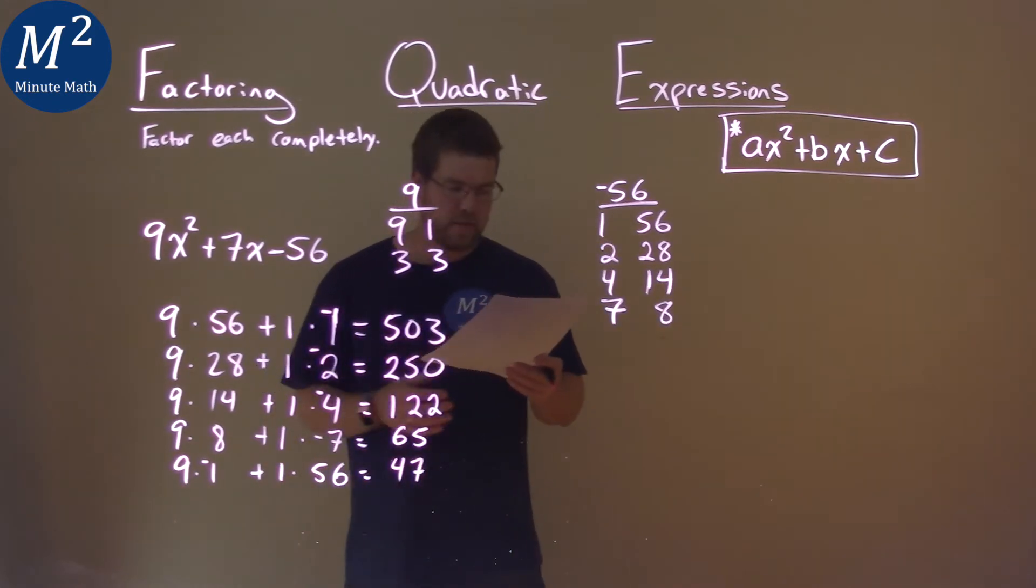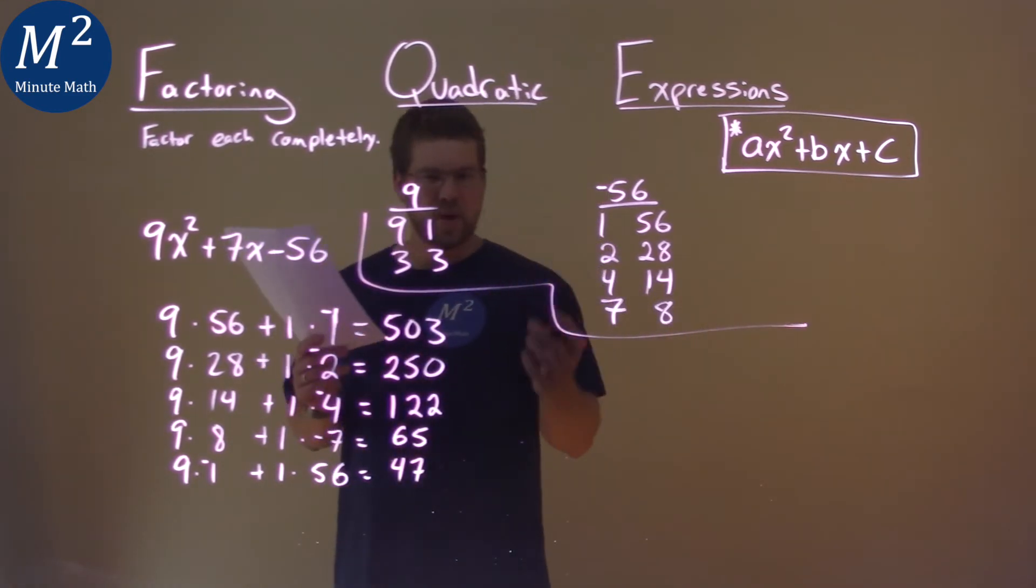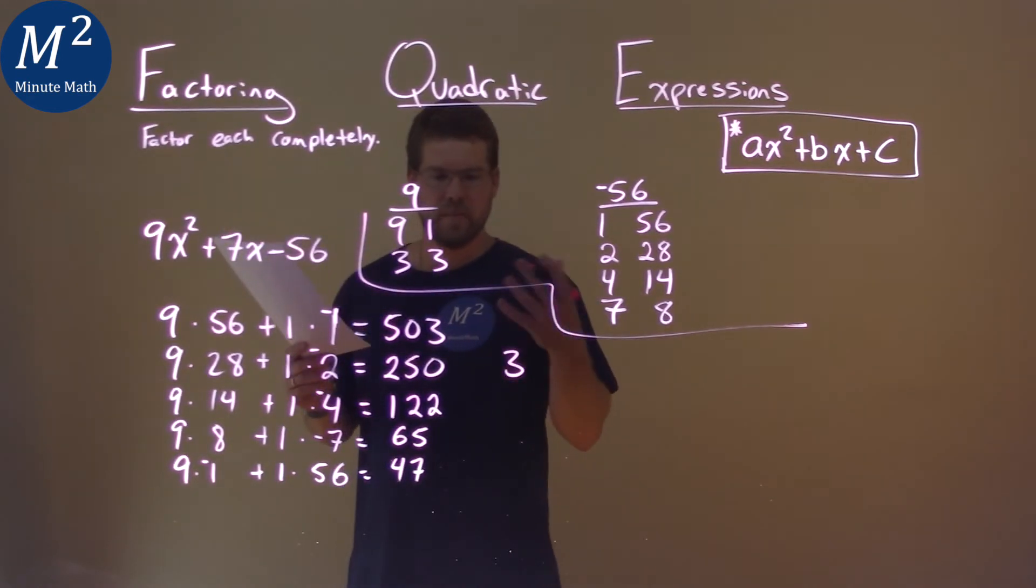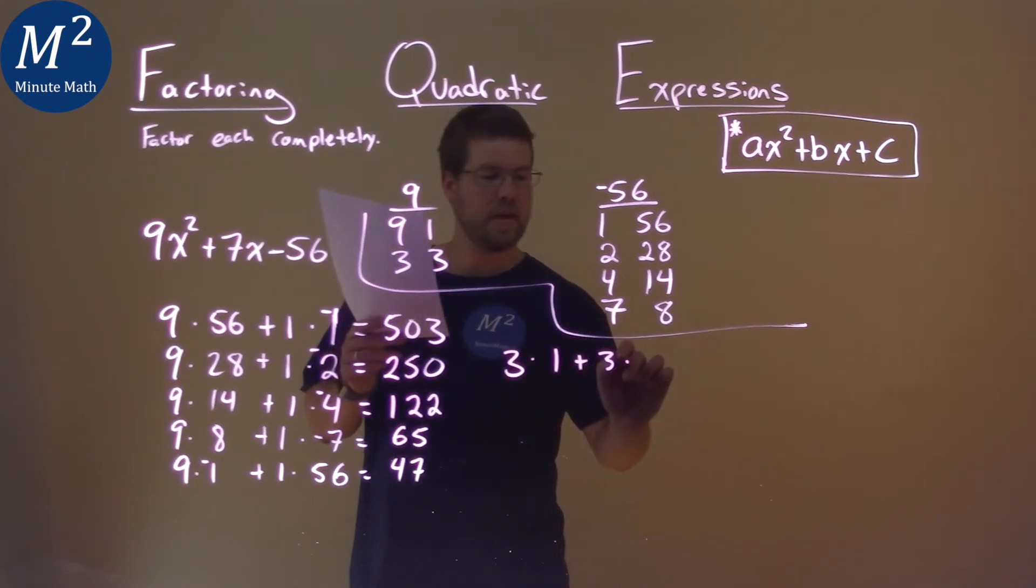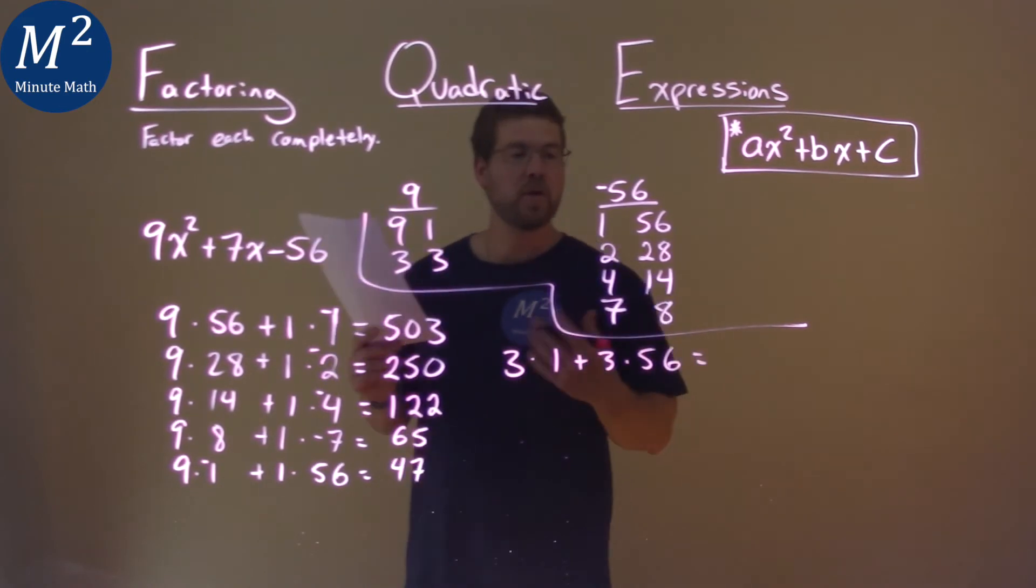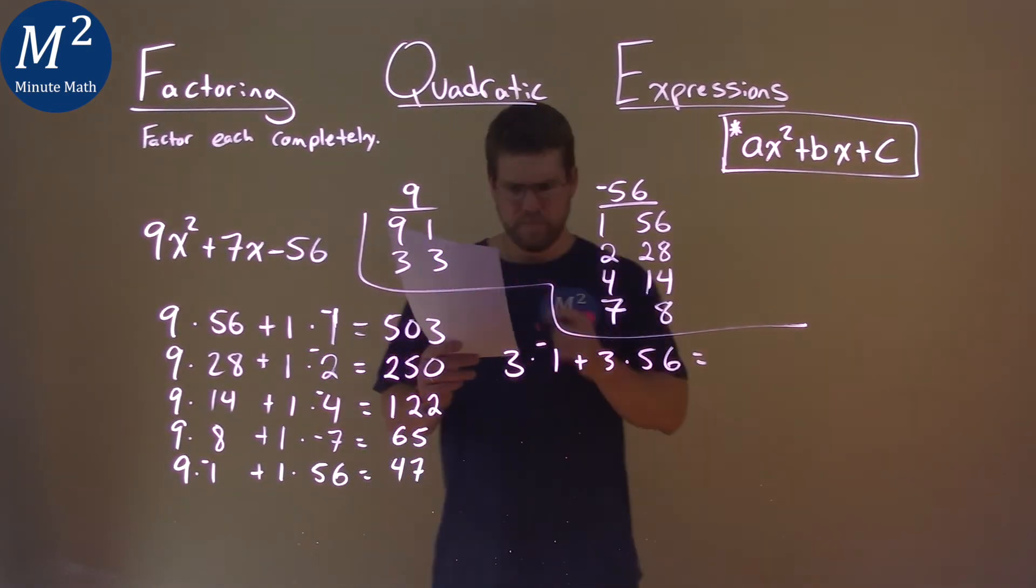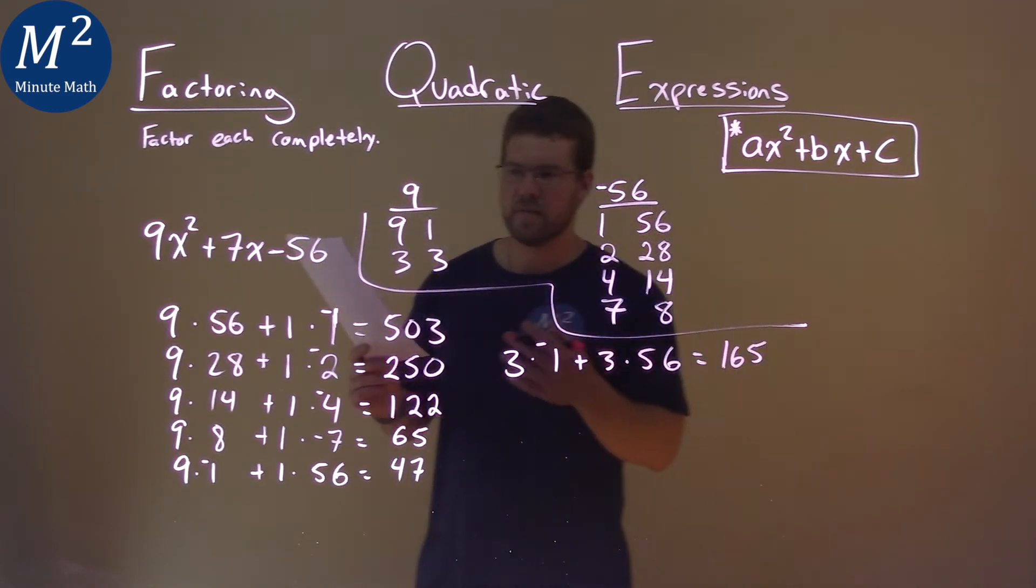Same idea. We're going to go through, and this one's a little easier because they're both 3s, so we can test them all pretty quickly. 3 times 1 plus 3 times 56. The smaller of the two is clearly 3 times 1, so we put a negative there. 3 times negative 1 plus 3 times 56 is 165, not 7.